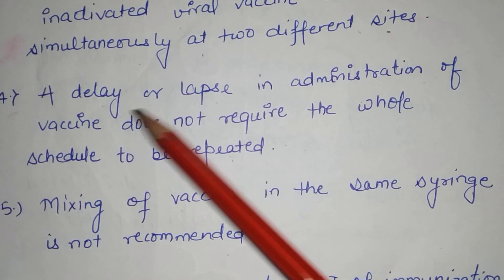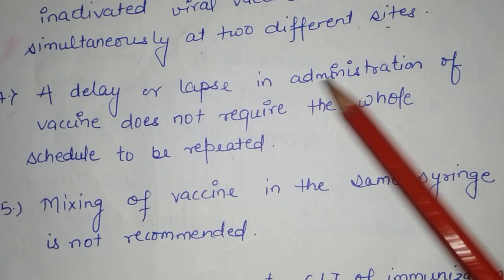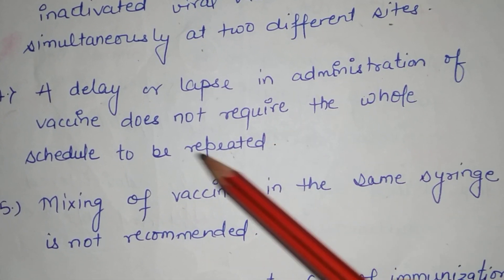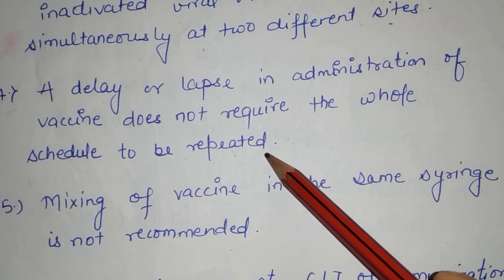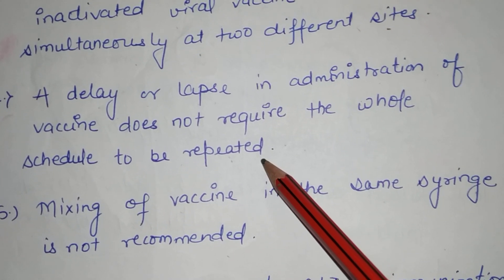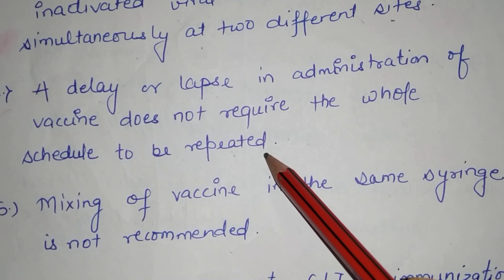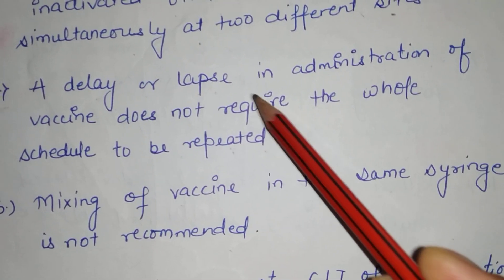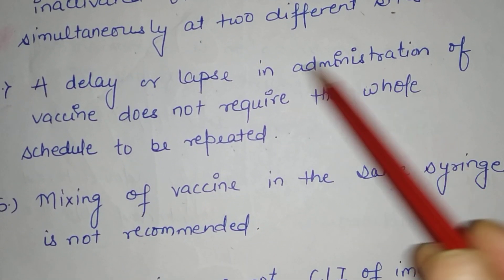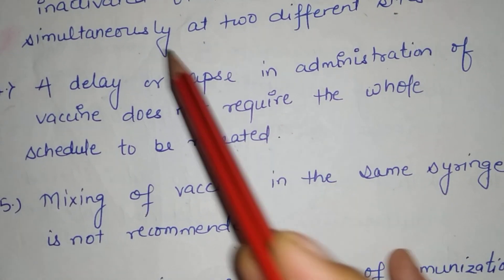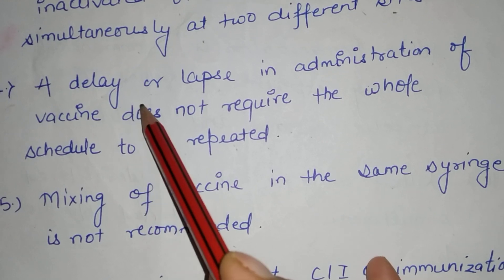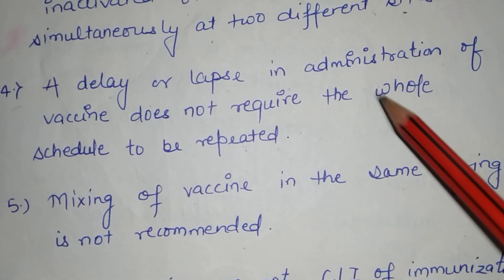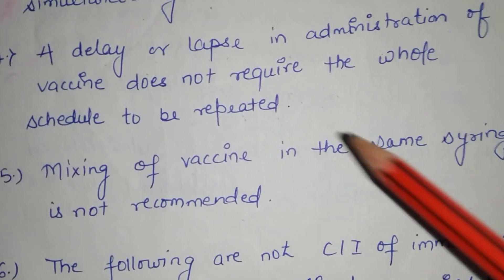The next principle is: a delay or lapse in the administration of a vaccine does not require the whole schedule to be repeated. If there is any delay, the whole schedule should not be restarted. The lapsed vaccine can be given when the person comes to the OPD.